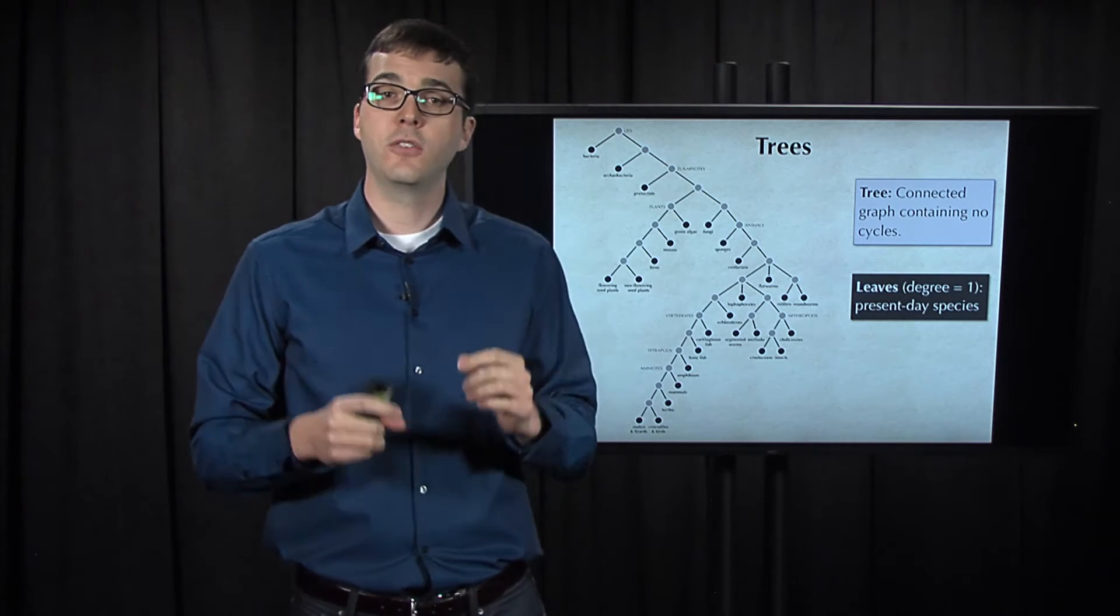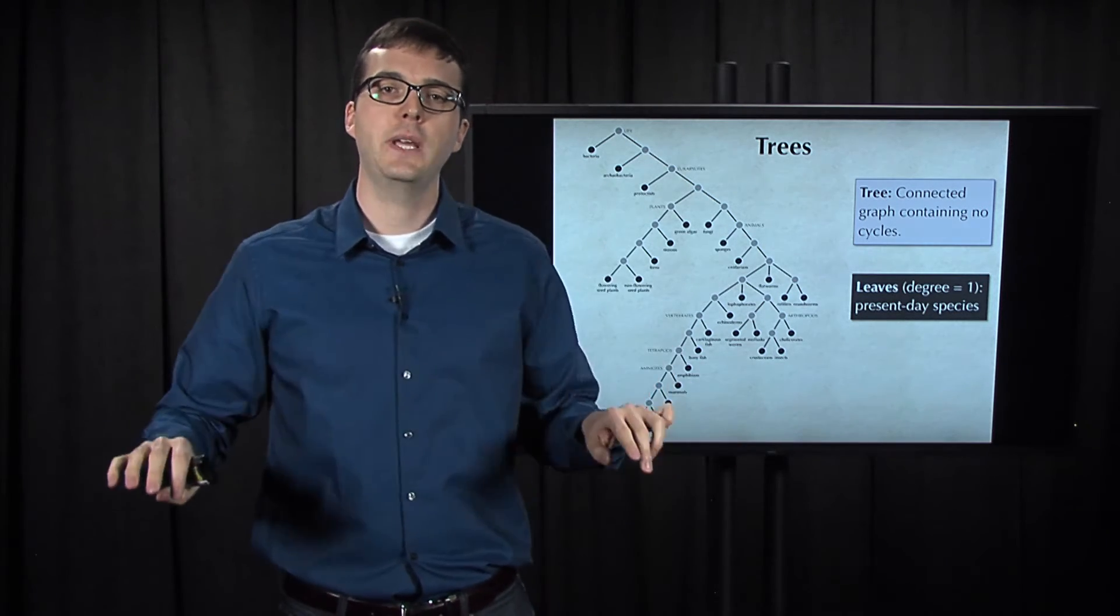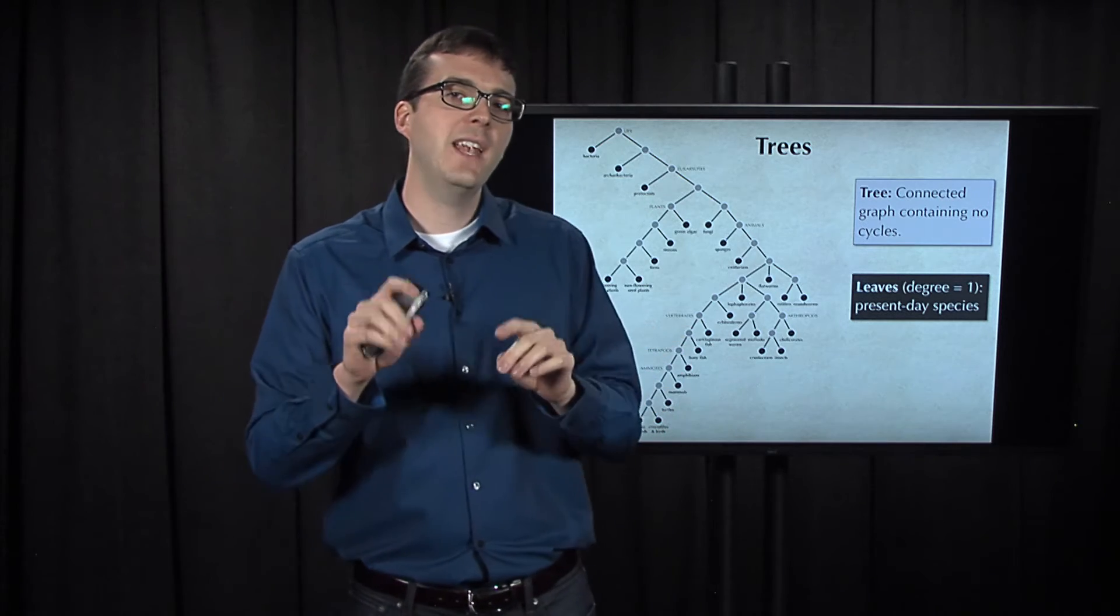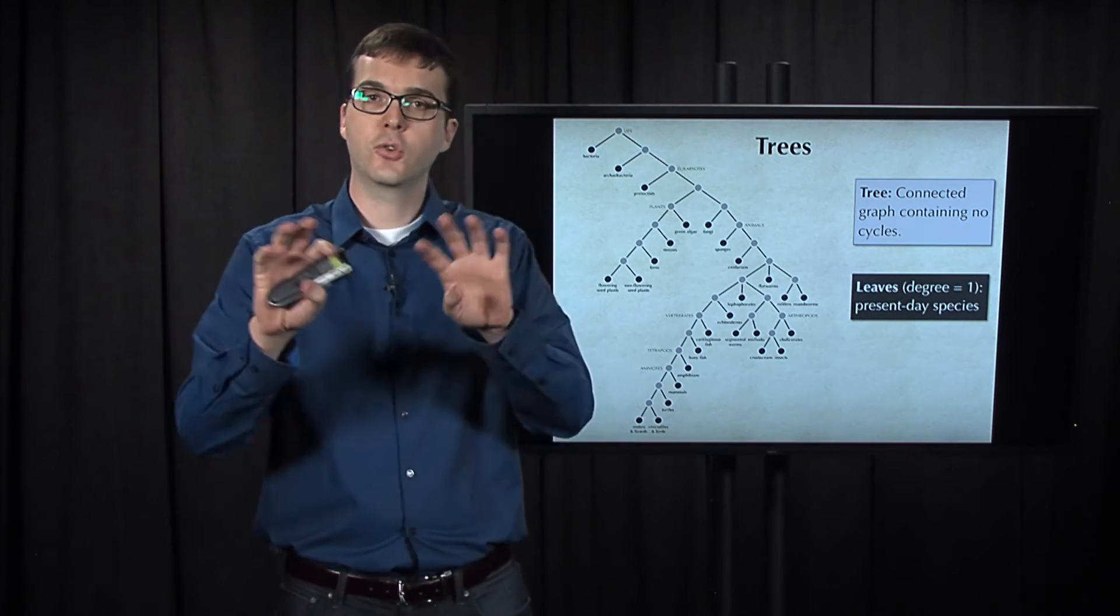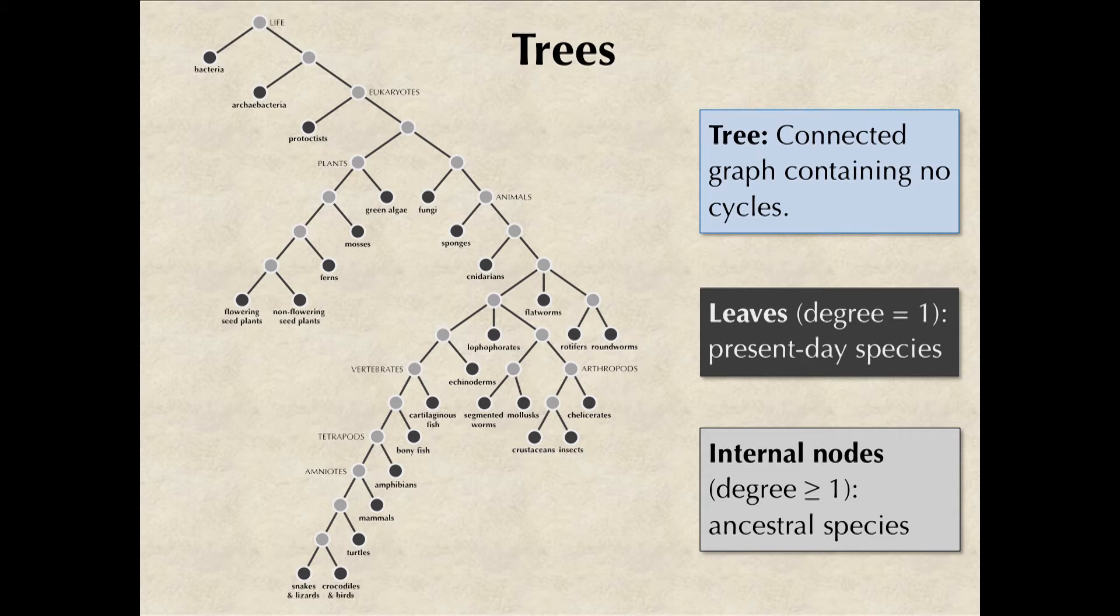When we use a tree to model a phylogeny, the present day species should be at the ending nodes of the tree. More formally, these ending nodes are called leaves, which I've shown in dark in this tree of life. They're simply nodes that have degree one. The remaining nodes, shown in a lighter color, are called internal nodes, and they're simply nodes of a larger degree than one.